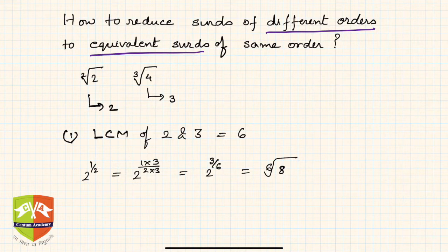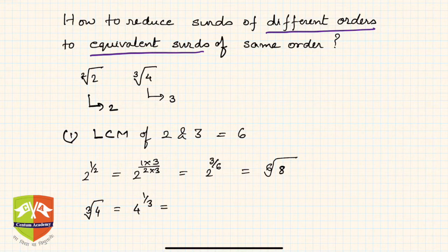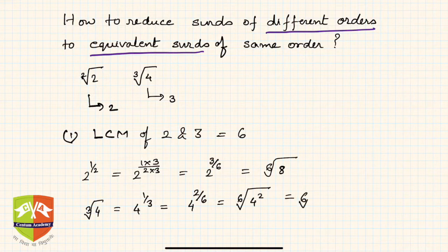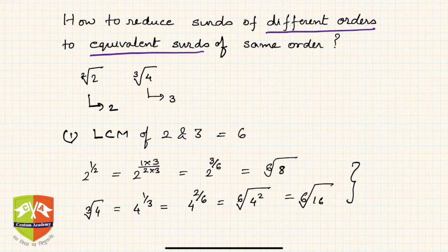We can equate the square root of 2 as the 6th root of 8. Now, cube root of 4 is nothing but 4 to the power 1/3. To make it a 6th root, we write the exponent as 2/6, so it becomes the 6th root of 4 squared, which is the 6th root of 16. We observe that now both are of order 6, and hence they are same-order radicals.